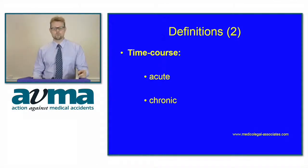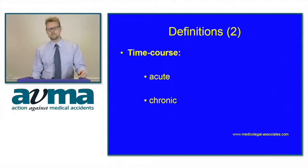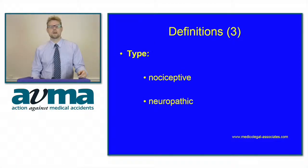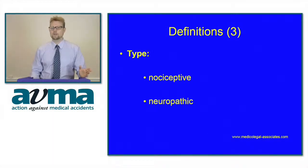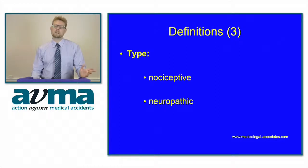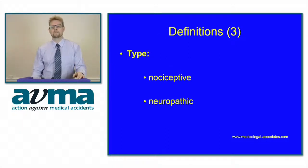There are two time courses for pain: acute pain, which is less than three months, and chronic pain, which is greater than three months. There are also two major types of pain. Nociceptive pain, which we're all familiar with, is where the pain signalling pathways are intact and working properly. This includes back pain, neck pain, stubbing your finger — that sort of thing. These are all normal types of pain.